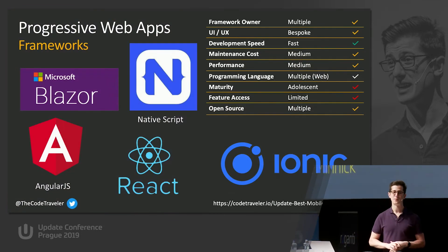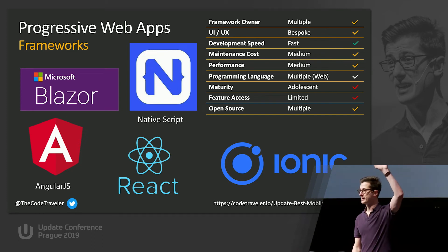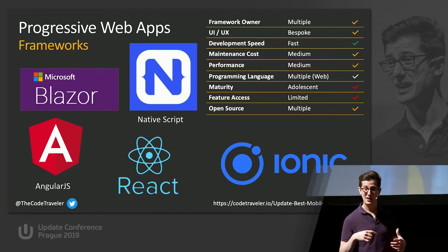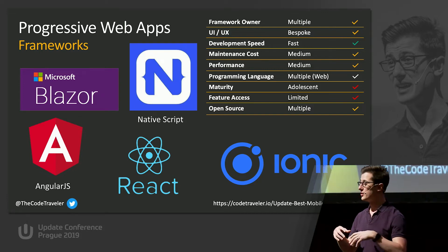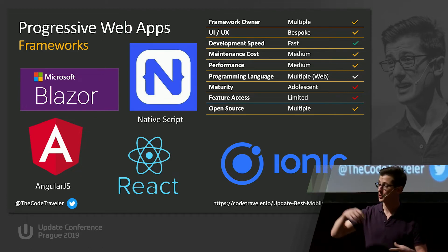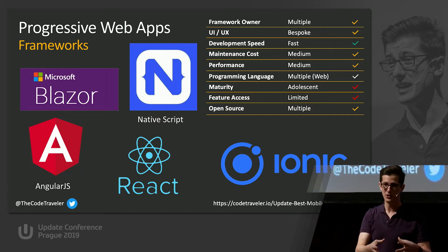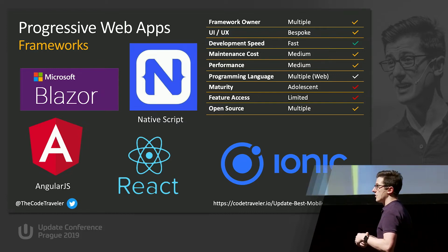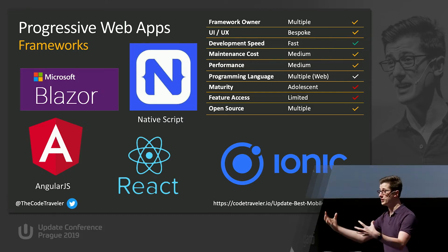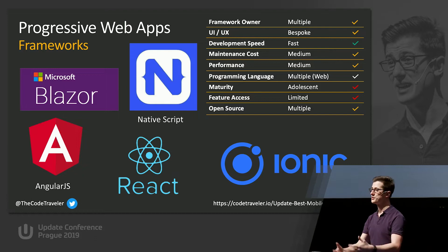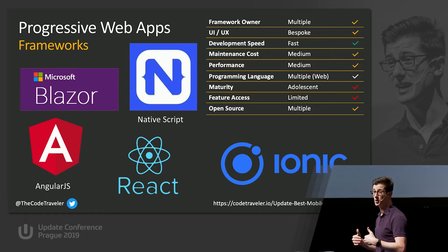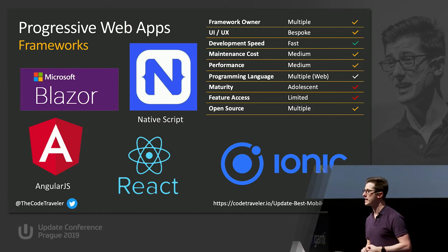Nowadays there are progressive web apps. A normal web app makes a request to the server, the server generates all the code, sends it back to your browser, and the browser displays what the server renders. With a PWA — a progressive web app — when the browser makes that request, all that information is downloaded to the user's device, and then the browser handles all of the rendering. We can bring that to mobile and essentially have a website run as if it were a native app on a mobile device.